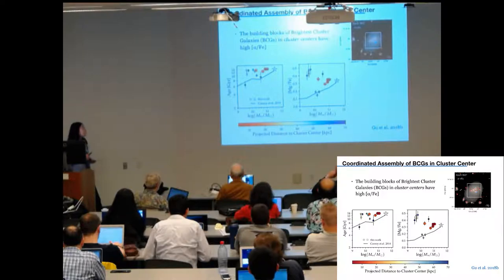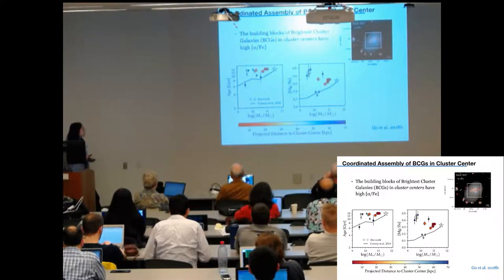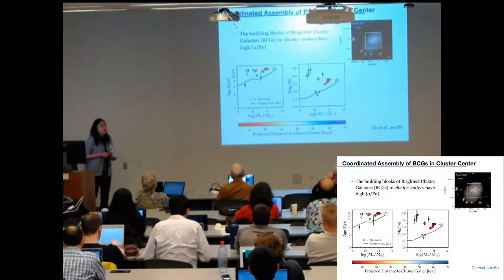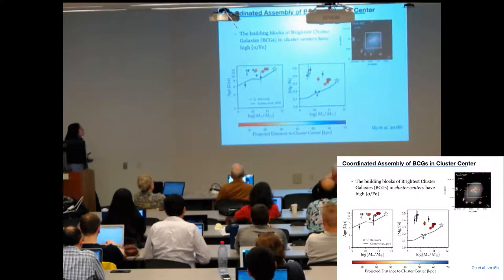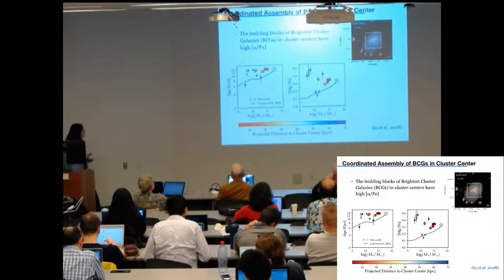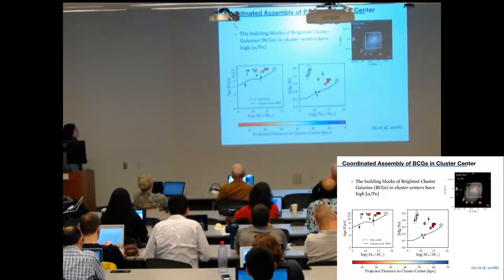I plot the scaling relation for the overall population in the gray lines here. This is from a study led by Charlie Conroy in 2014. And from this figure, we can see that the early type galaxies in the cluster centers are old and they are always alpha-enhanced. And which makes the scaling relation they follow very different from the scaling relations followed by the general population.